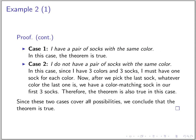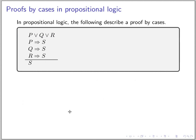Since these two cases cover all possibilities, we conclude that the theorem is true. We show that it's true in every possible way. So that's an example of a proof by cases. It's pretty close to exhaustive proof, but we do that in a clever way.